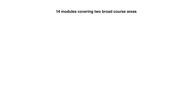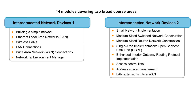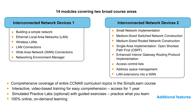The curriculum for the CCNA certification is broadly divided into two areas: Interconnecting Network Devices 1, or ICND1, and ICND2. This online course provides a package of 14 modules covering both areas. Hands-on practice exercises are also available separately through an online simulator. Please take a moment to go through the course topics to get a better understanding of the curriculum.